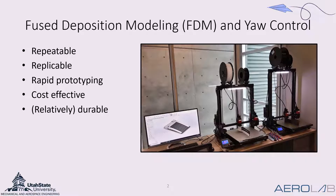Fused deposition modeling has several benefits. First, 3D printing is repeatable, meaning I could take the part files, print out a part, and repeat the print several times with the same exact quality and dimensions. Secondly, I could take those part files and put them in another printer with the same print settings and replicate the part. Thirdly, 3D printing is very quick and requires minimal upkeep and man hours during assembly. Fourth, 3D printing is extremely cheap — the material is generally running $20 to $30 a kilogram. And lastly, 3D printed parts are relatively durable in the realm of RC aircraft.